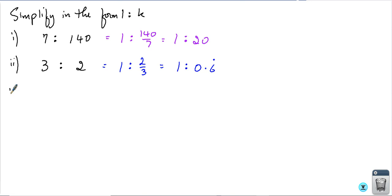Third example: Simplify 5 is to 2 in the form 1 is to k. So I need 1 is to something. For 5 to become 1, I have to divide by 5. So that's 2 fifths. I can leave my answer as it is, or 1 is to 0.4. Another example.